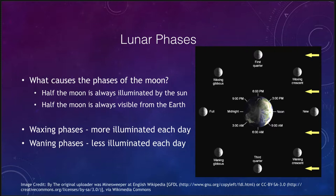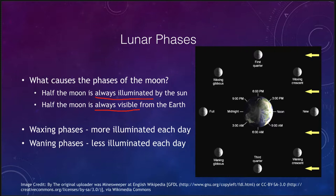The moon phases are caused by the illumination of the Sun and the moon's position around the Earth. There are two things that are important here. First, half the moon is always illuminated by the Sun, and half the moon is always visible from the Earth. No matter what the phase of the moon is, half of the moon is illuminated. In a full phase, we are seeing that illuminated half. In a new phase, half of the moon is still illuminated, but that is now the half pointing away from the Earth, so we do not see it.